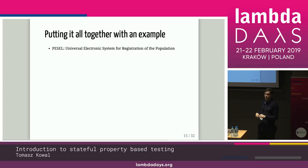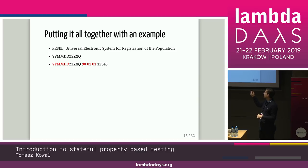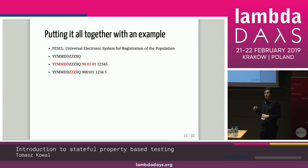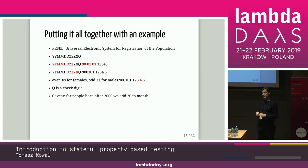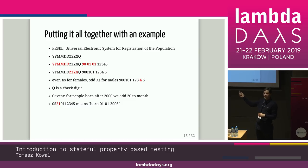In Poland, we have a social security number called PESEL. PESEL has a format where the first six digits are the birth date — year, month, day. So this person was born January 1st, 1990. Then there are four digits identifying the individual, and one of those digits is special: even values mean female and odd values mean male. The last digit Q is a check digit. Surprisingly, for people born after 2000, you need to add 20 to the month — so someone born January 1st, 2005 has 21 in the month field. This broke a couple of systems when 2000 came.